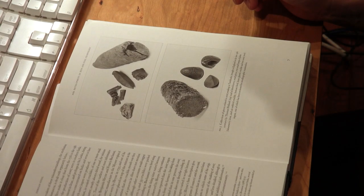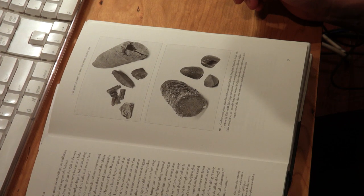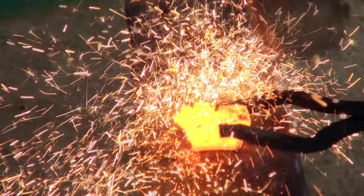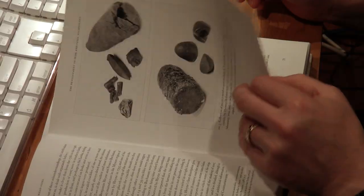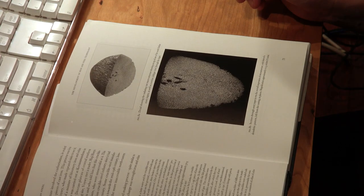Wootz steel is very high carbon steel made in clay crucibles in India 2000 years ago. One of the ways to create it is to carburize bloom iron with dried wood.